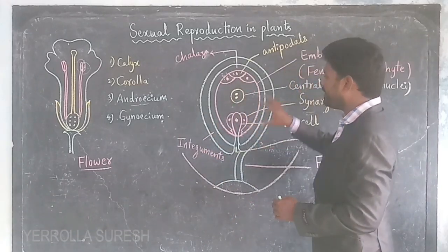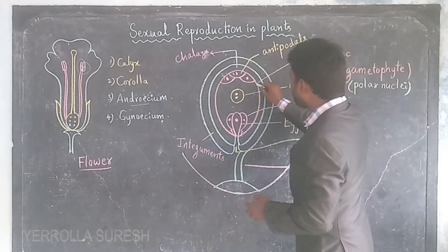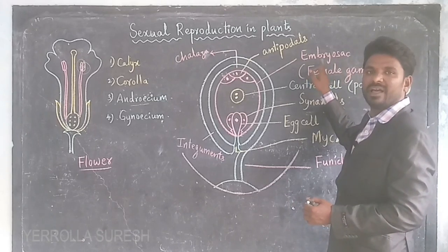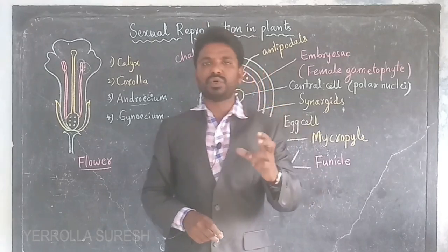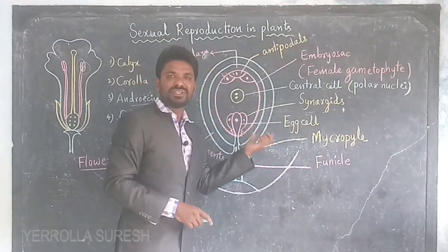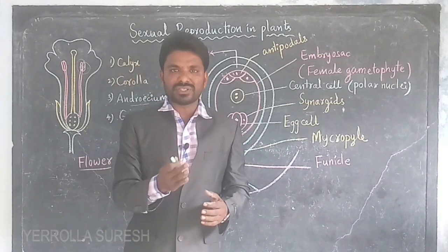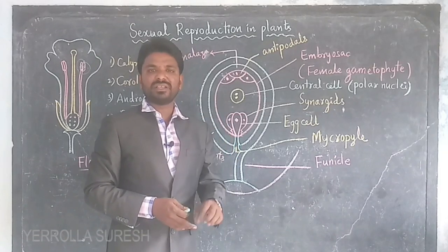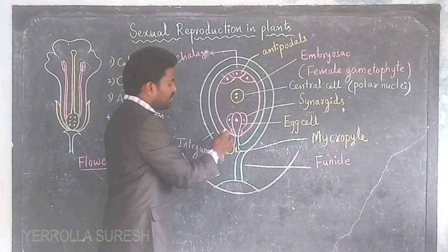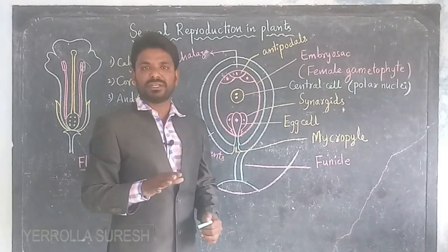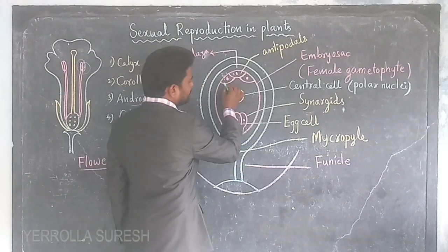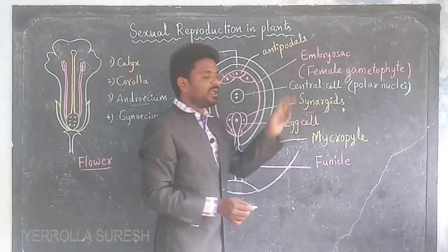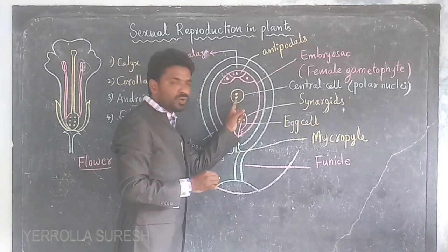The speciality of an ovule is the presence of a central structure inside it called the embryo sac, also known as the female gametophyte. The embryo sac has seven cells and eight nuclei. At the upper side of the embryo sac, three cells are present, each with a single nucleus — these are called antipodals. In the central portion, there is one cell with two nuclei, called the central cell or polar nuclei or secondary nucleus.